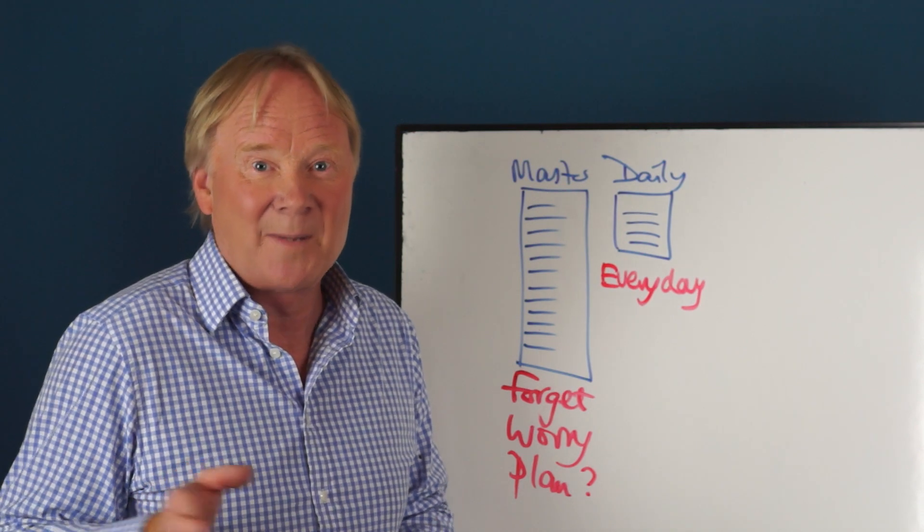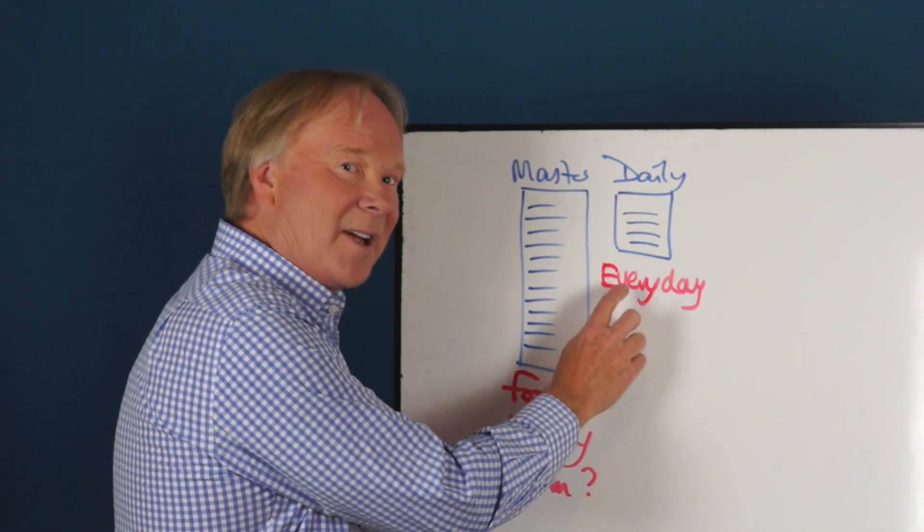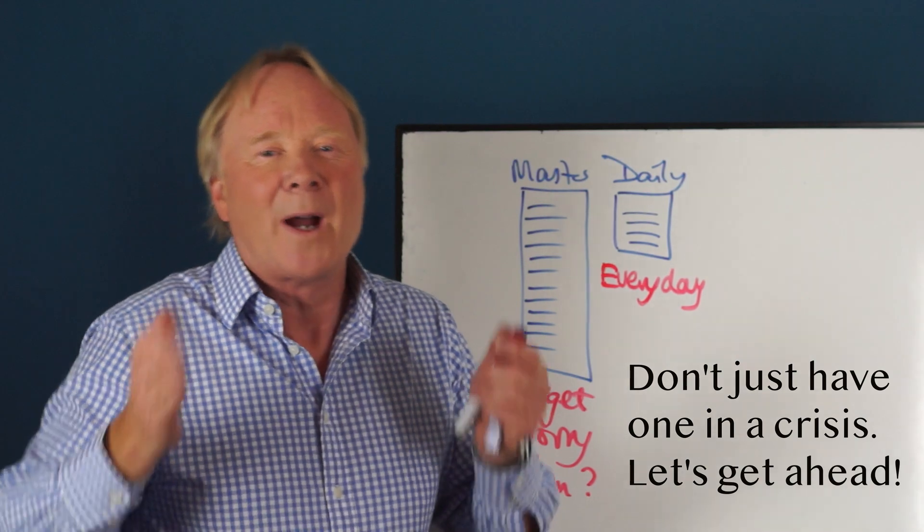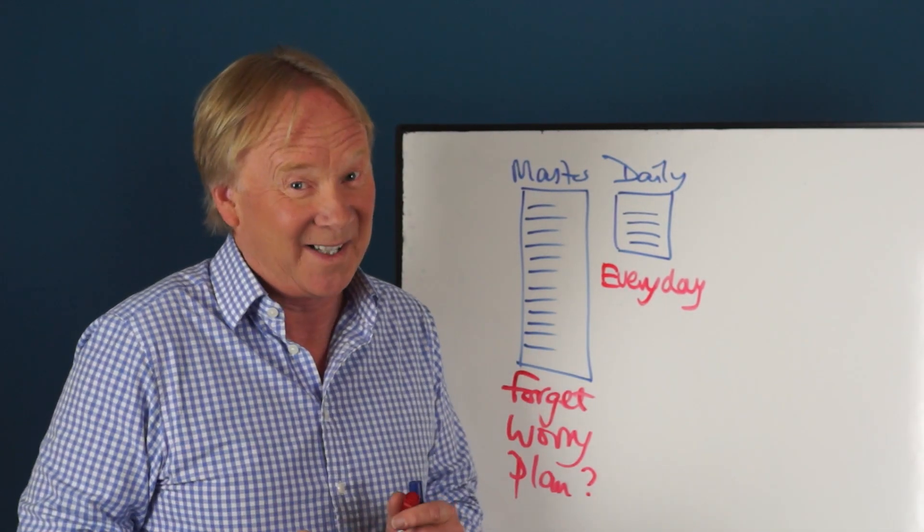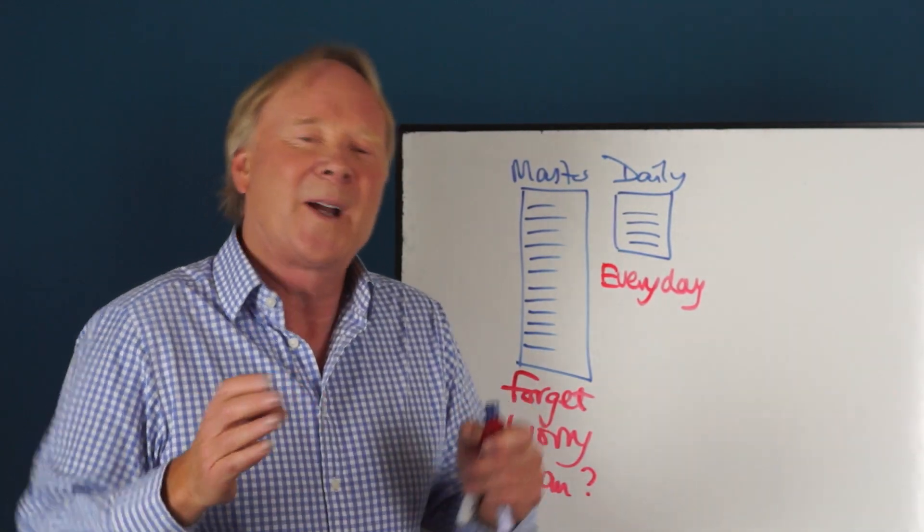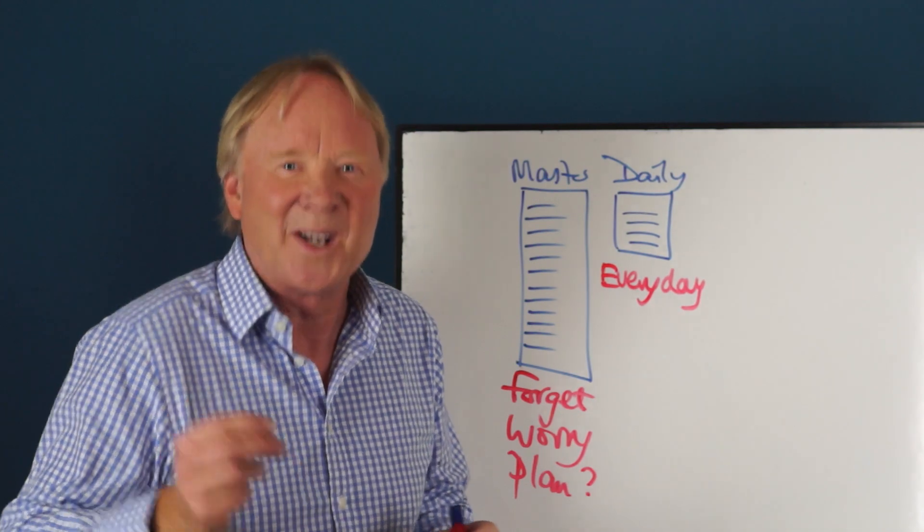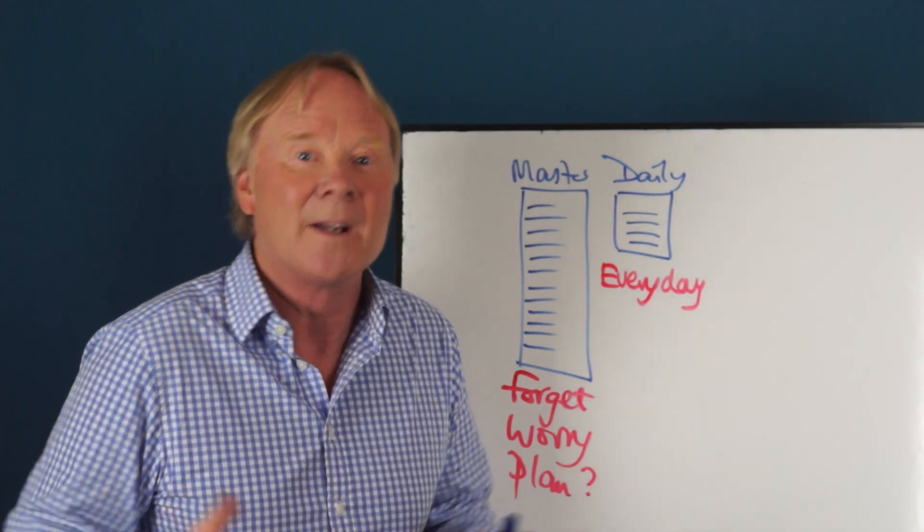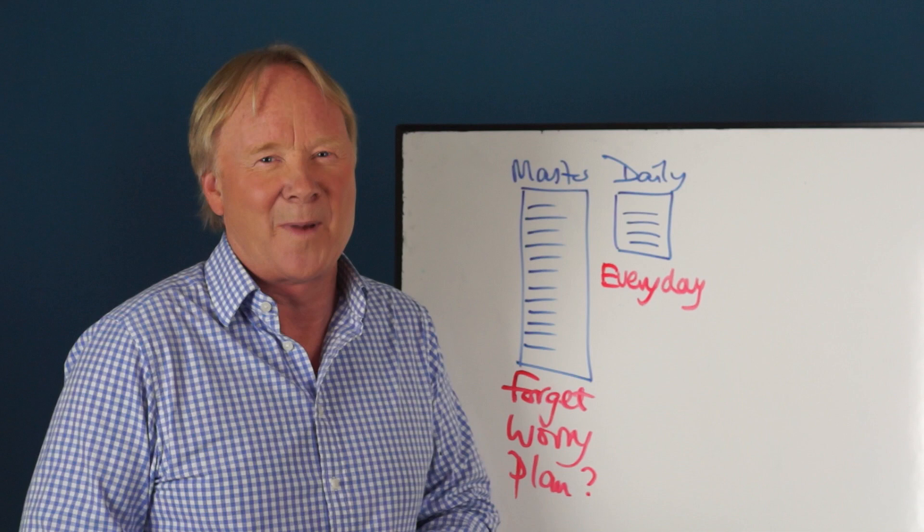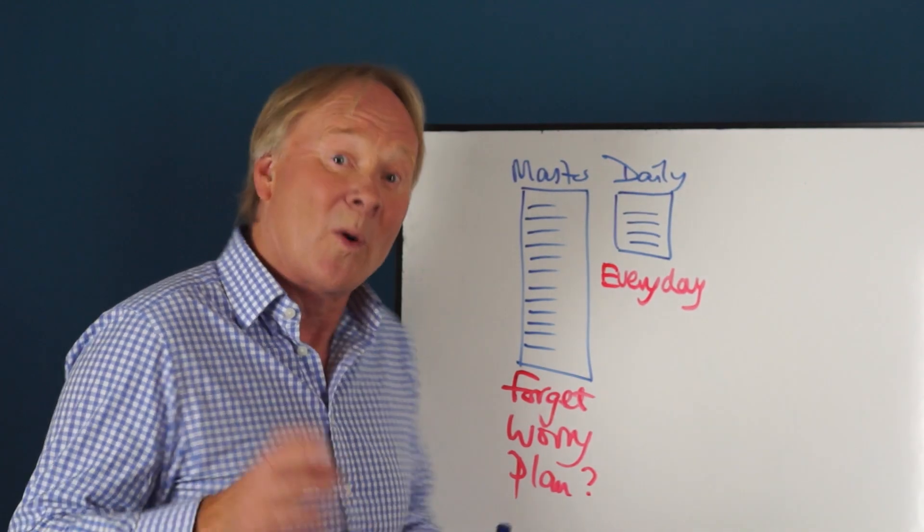Now most people have a jobs to-do list when they're busy, but not many people have one every day, even though it only takes two minutes to write it. So if you become one of the 8% who have a jobs to-do list every day, you're already in the top group of the most efficient people.